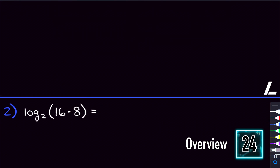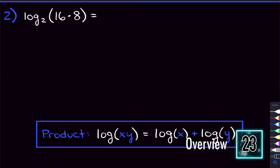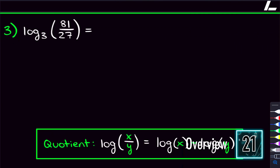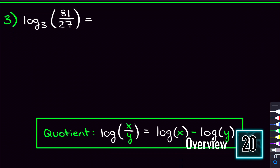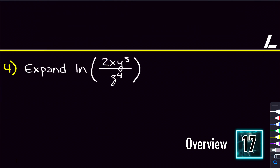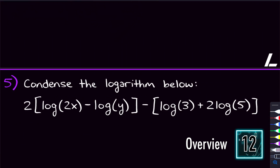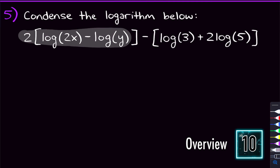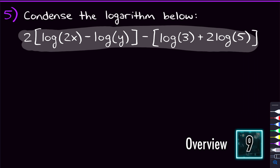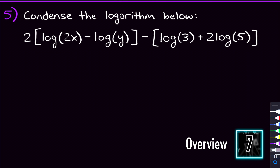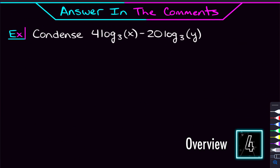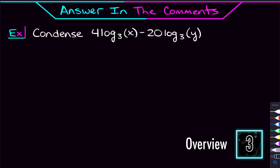Here's an example with the power property, here is one with the product property, and then here's one with the quotient property. And after we go through all that, I'm going to be giving you some harder examples — one where we need to actually expand a log, and then one where we need to condense an entire logarithmic expression. So we'll talk about how to deal with both of those, and then I'll give you a problem to try and answer in the comments.